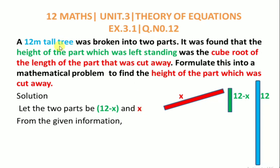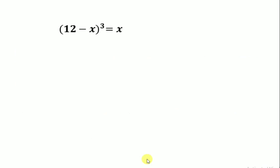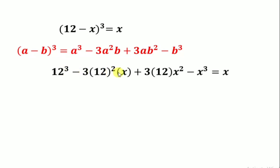Given: the height of the part which was left standing equals the cube root of the length of the part that was cut away. So 12 minus x is equal to the cube root of x. Taking cube on both sides, we get 12 minus x whole cube is equal to x. Expanding using the formula a minus b whole cube equals a cube minus 3a squared b plus 3ab squared minus b cube, where a is 12 and b is x.